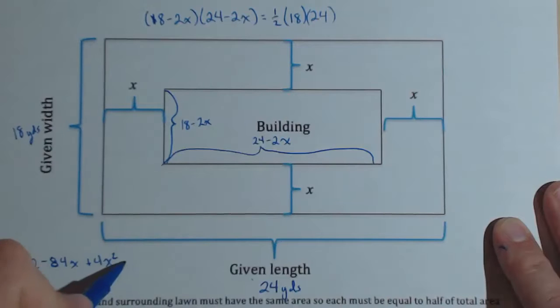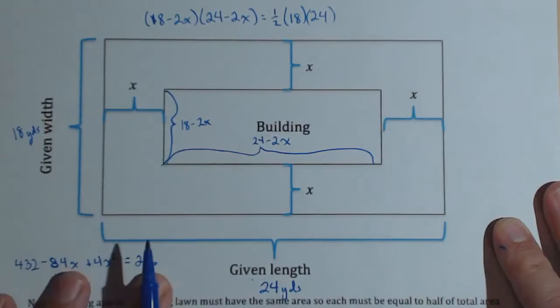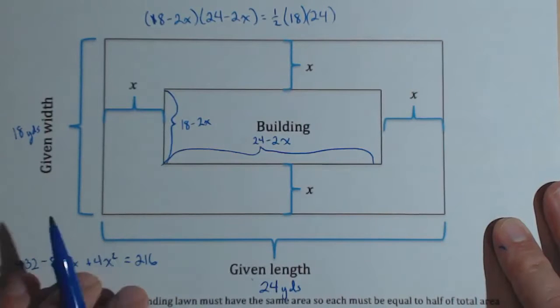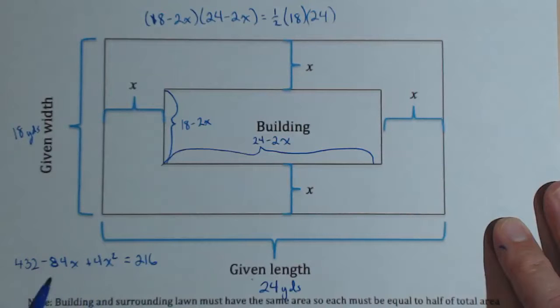Now there are ways we can solve from here. Graph both sides, find where they intersect. But we always want to get a quadratic equal to 0 so we can solve by hand. And I'm going to write it in descending order. So 4X squared minus 84X. If I subtract the 216 off of each side, that gives me a plus 216 equals 0.